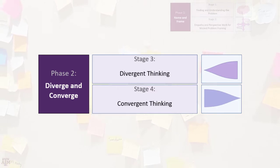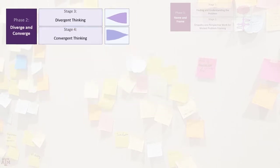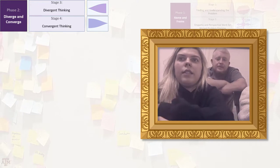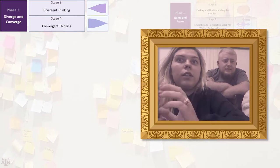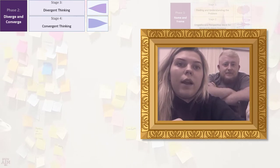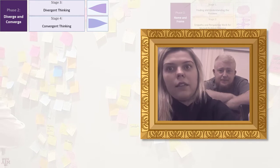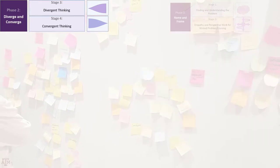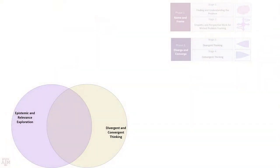After discussing the clusters, the group selects the one to which they are drawn, refining and synthesizing ideas until it's possible to craft a potential solution statement. It's important that there is only one solution, and the team will work on that solution throughout the rest of the process. A student explains: 'A common trend across our sticky notes was money, fundraising, and donations — that's where our high-fidelity prototype came from.' The designerly ways of knowing prominent in this phase are divergent and convergent thinking and epistemic and relevance exploration.